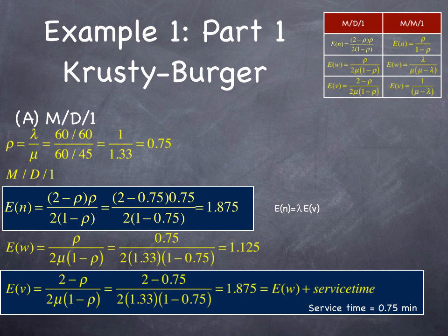The expected wait time in minutes is 0.75 over 2 times 1.33 times 1 minus 0.75, which is 1.125. The expected delay, which is just the wait time to get served plus the service time, is 2 minus rho over 2 mu times 1 minus rho. Plug in our numbers. It gives us 1.875. That allows us to solve part A with the M/D/1 equation.